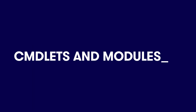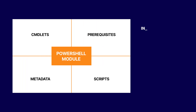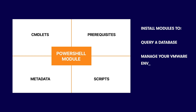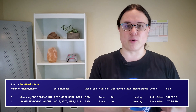Two primary features I want to talk about are Commandlets and Modules. A module is a set of related functionalities and resources grouped together. You can install modules for things like querying a database, managing your VMware environment, or troubleshooting your network. You can even create your own modules. Azure PowerShell is actually a module that you install and use. A commandlet is a single lightweight command that performs an action.